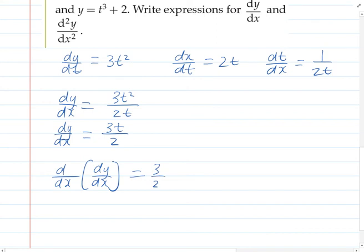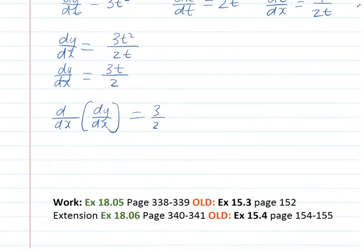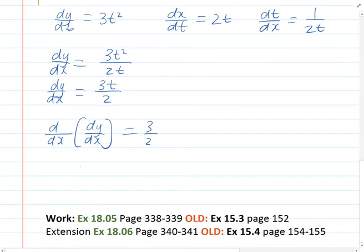And what we do is multiply that with the derivative of dt/dx, which we have over here. So our second derivative, d²y/dx², is going to be 3 over 2 times 1 over 2t, which simplifies to 3 over 4t.